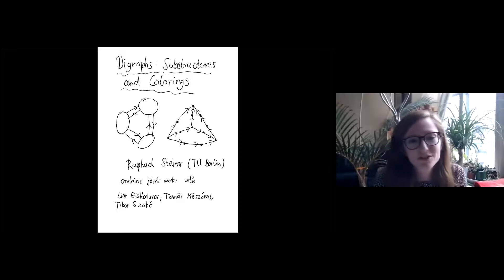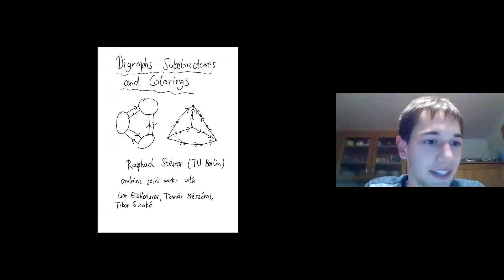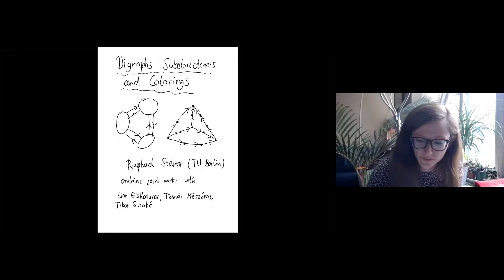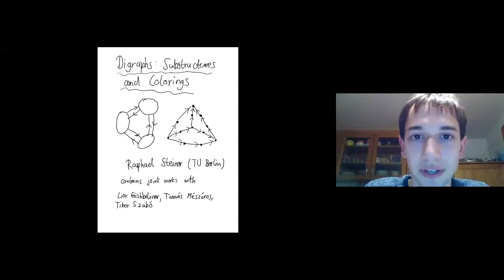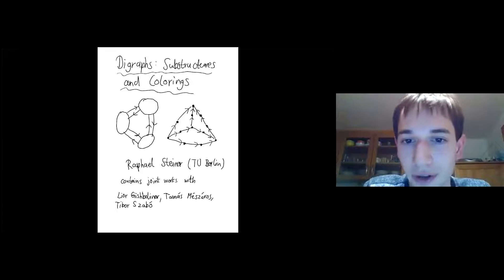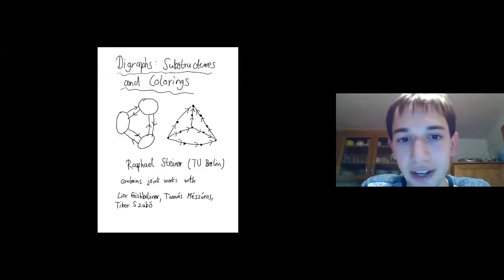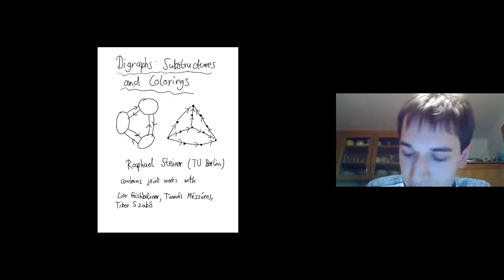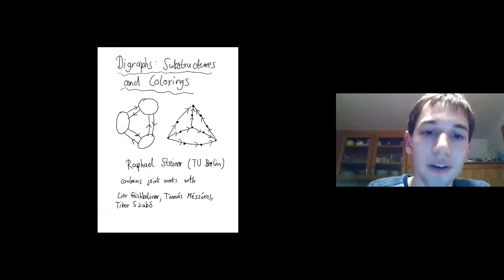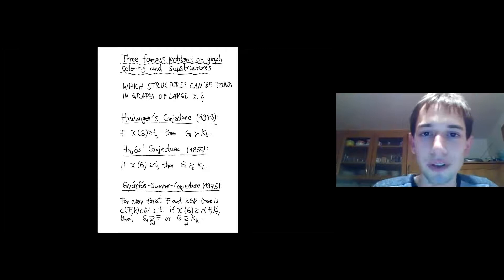Raphael Signer is going to be talking about substructures and colorings in directed graphs. The topic is directed graphs, colorings of directed graphs, and the relation of the colorings to substructures. The talk will first recall some well-known undirected graph results, then move to directed generalizations. It will be mostly a survey, but will also cover some new results and open questions relevant to the area.